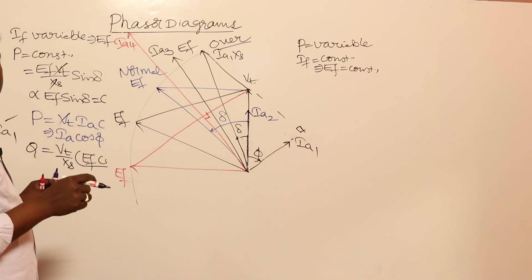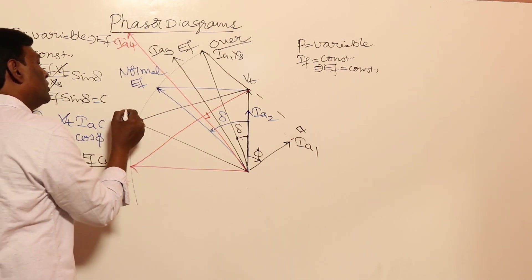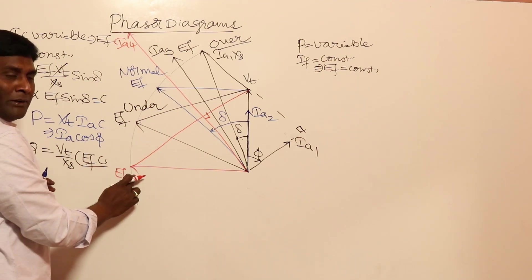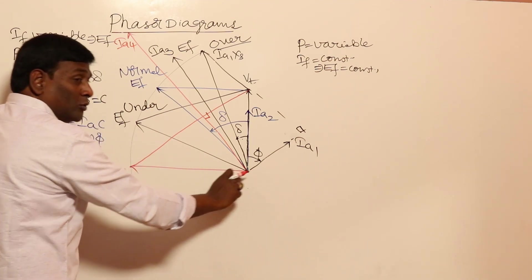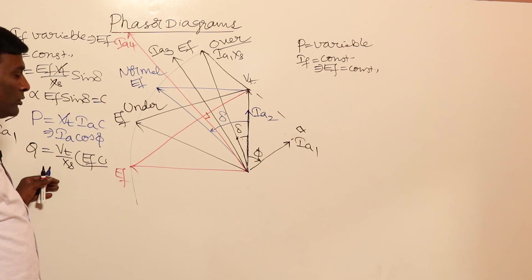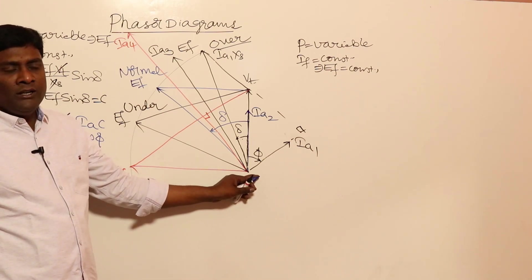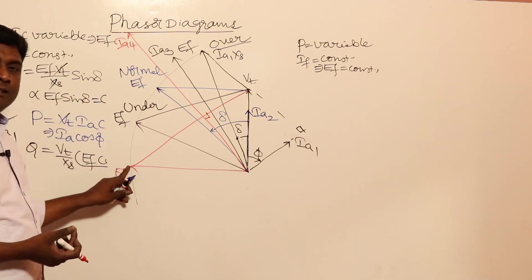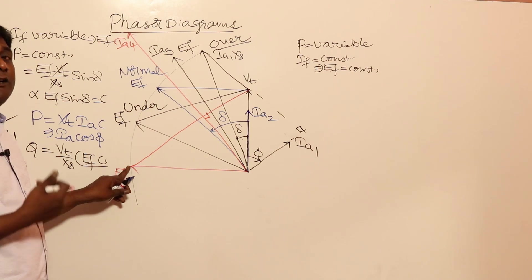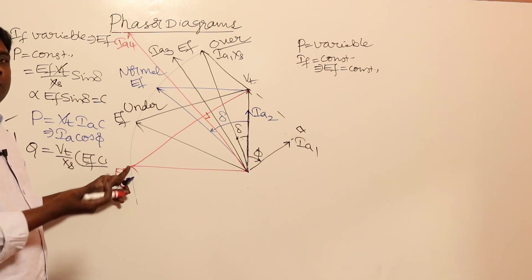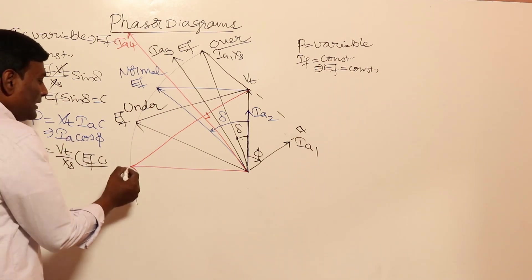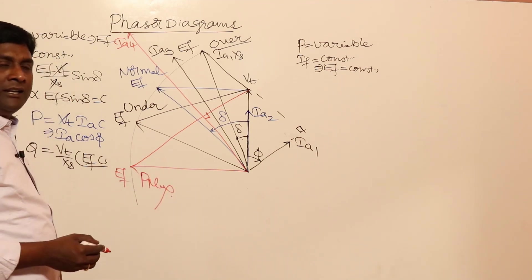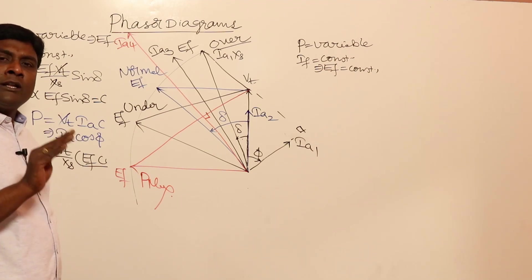At delta = 90 degrees, cos delta = 0, so EF cos delta = 0, meaning EF cos delta minus Vt is negative. This machine is under-excited and absorbs reactive power. This is the P maximum condition. The analysis is the same for both motor and generator — there is no fundamental difference.